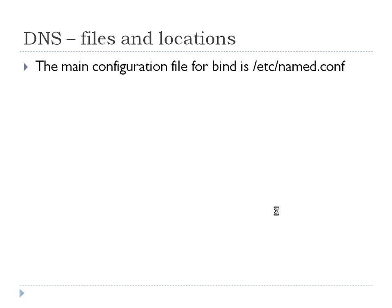The main configuration file for BIND is, as you would figure, in the '/etc' directory called 'named.conf'. It's in '/etc' because it doesn't change a ton. You're going to list the domains that you're responsible for, and it doesn't change a lot after that.